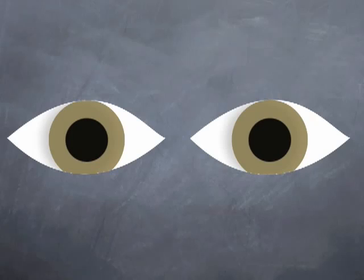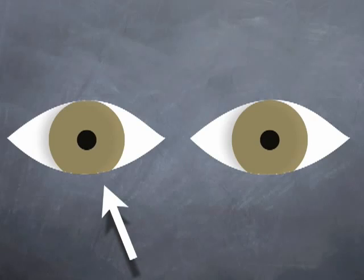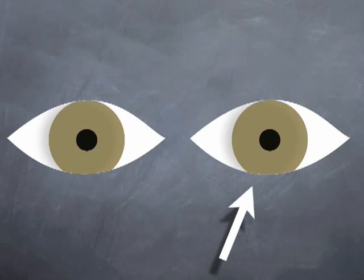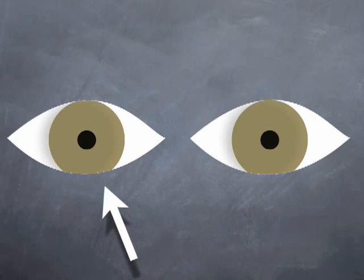Now swing the light from eye to eye quickly but pausing on each eye for around 2 seconds. In the normal patient the pupils will constrict then relax a little each time the light is swung to them.